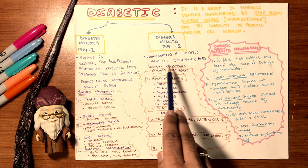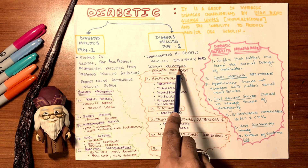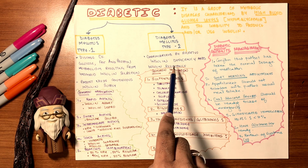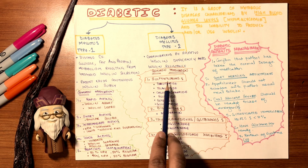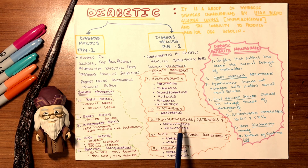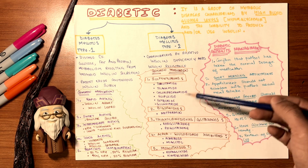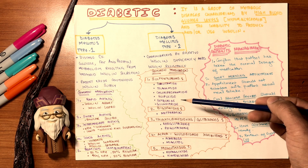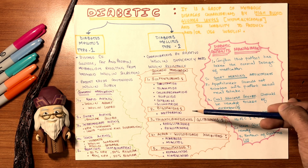Diabetes mellitus type 2 is characterized by relative insulin deficiency and insulin resistance. Insulin resistance is important because the tissues or target organs cannot accept the pre-existing insulin — it's a receptor issue. Common medications include sulfonylureas, biguanides, thiazolidinediones or glitazones, alpha-glucosidase inhibitors, and meglitinides. These drugs are usually in oral form and act at different areas, either increasing insulin receptor affinity or increasing insulin production.